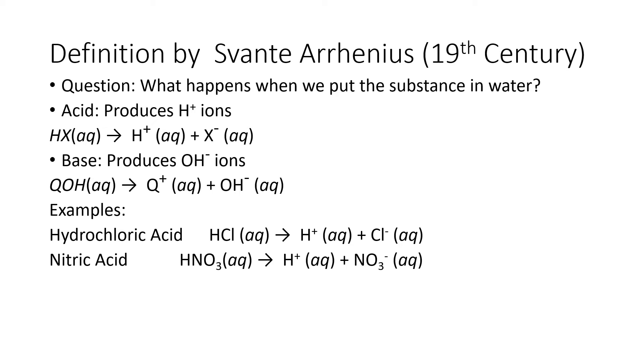However, when you put them in water they ionize. Notice that when they ionize, the hydrogen ion is one species, but the rest of the molecule stays either as a monoatomic ion, like HCl producing chloride, or a polyatomic ion, just like nitric acid produces nitrate ions.